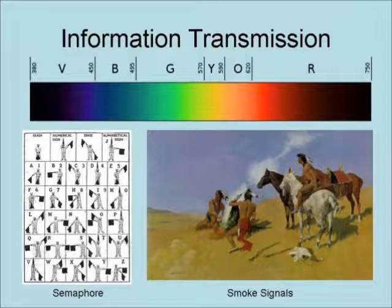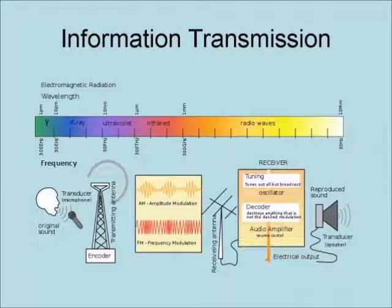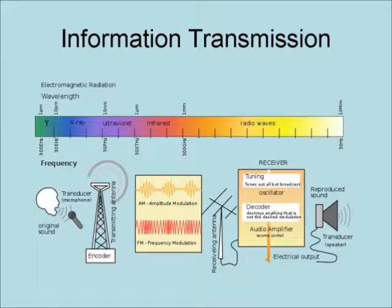Smoke signals became famous because of their use by American Indians. Radio waves are low-frequency electromagnetic waves that are commonly used to transmit information. The transmission of information by radio involves encoding it into a signal that gets transmitted by radio waves to a receiver. The receiver then converts the signal back into a recognizable form of information.